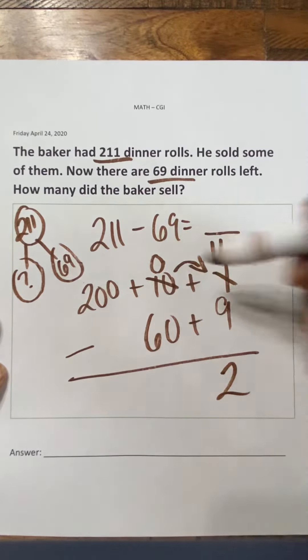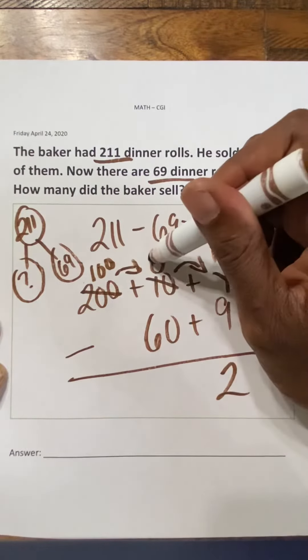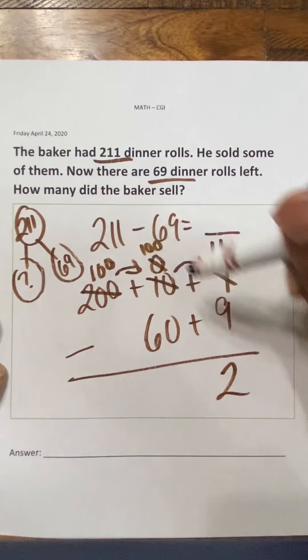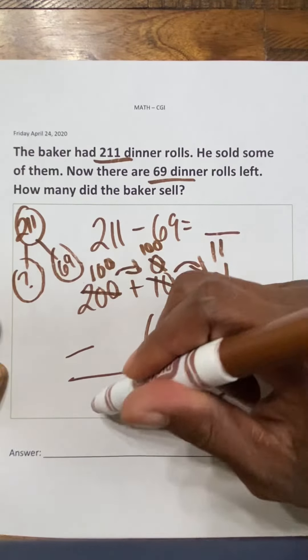I can't take that. I don't have enough. Take 100 out, leave me with 100. 100 plus 0 is 100. 100 minus 60 is 40. 100 minus 0 is 100.